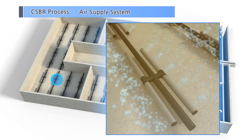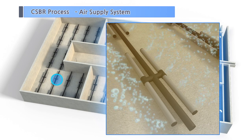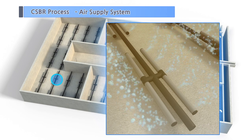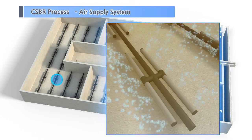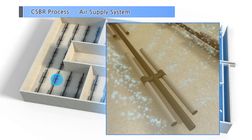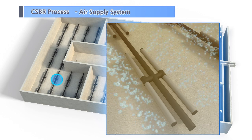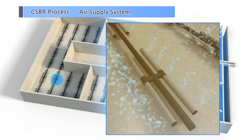The oxygen concentration in the cell is automatically adjusted by alternating the operation of the DO meter and motor-operated valve.